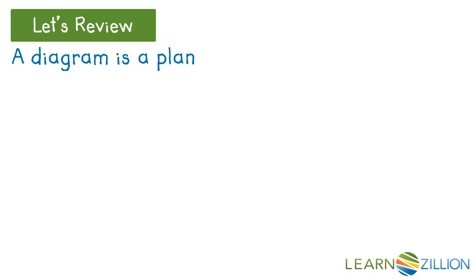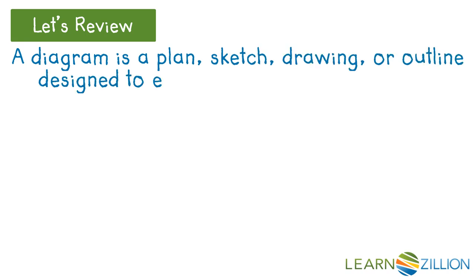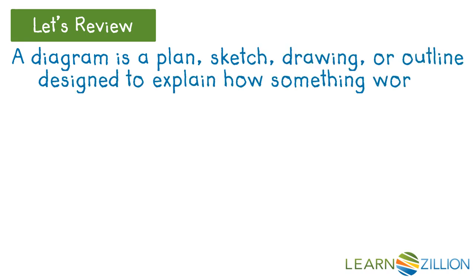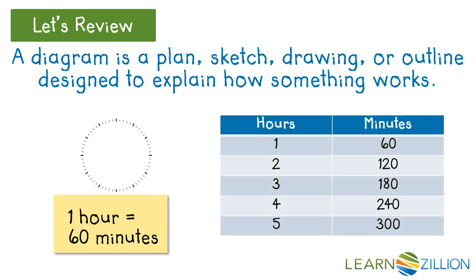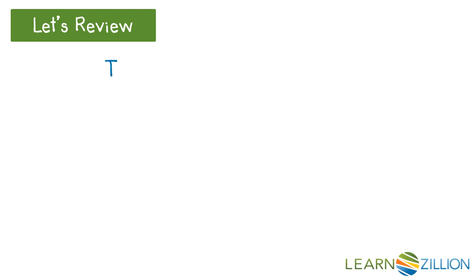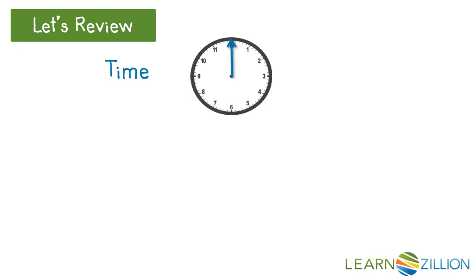A diagram is a plan, sketch, drawing, or outline designed to explain how something works. For example, a clock with hash marks for each minute explains how one hour equals 60 minutes. Another example would be a chart explaining how to convert five hours into 300 minutes. Let's review time — each number on the clock represents the hour as well as the minutes.